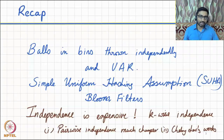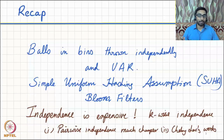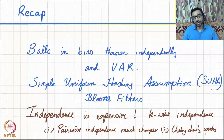We also looked at independence in the last lecture. In particular, we noticed that independence is somewhat expensive. But if we relax the notion of independence from mutual independence to k-wise independence, then it's cheaper. We looked at ways to generate pairwise independent random bits and pairwise independent random numbers, and we noticed that while limiting ourselves to pairwise independence, we didn't lose out too much — we were still able to employ Chebyshev's inequality.